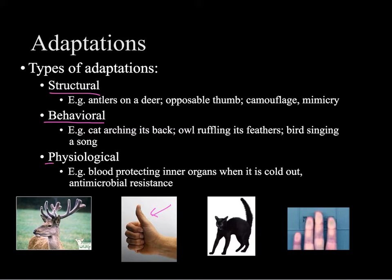The third type of adaptations are physiological — things that happen within the body that help survival that you're not really aware of. When it's really cold out, the first things you feel cold are your fingers, your nose, your ears, because the blood is protecting your internal organs. You can't live without your heart, lungs, and brain functioning, but if you lose your little toe to frostbite, it's not the end of the world.